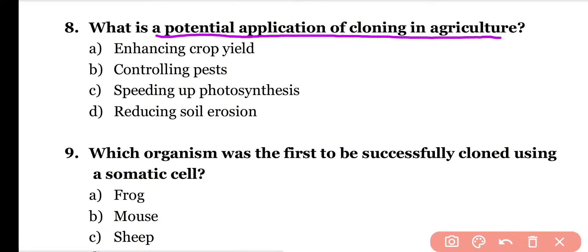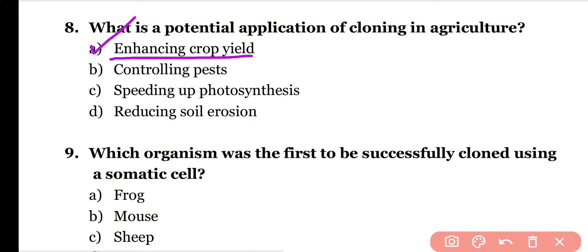Question number eight: What is a potential application of cloning in the field of agriculture? Options: enhancing crop yield, controlling pests, speeding up photosynthesis, reducing soil erosion. Correct answer is option A. Cloning is used in agriculture to enhance crop yield.